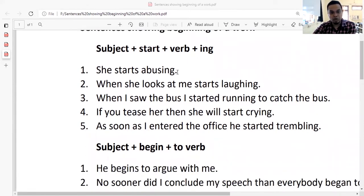She starts abusing. This is simple present tense. With she, you have to add S to the verb. When she looks at me she starts laughing. When I saw the bus, I started running to catch the bus.